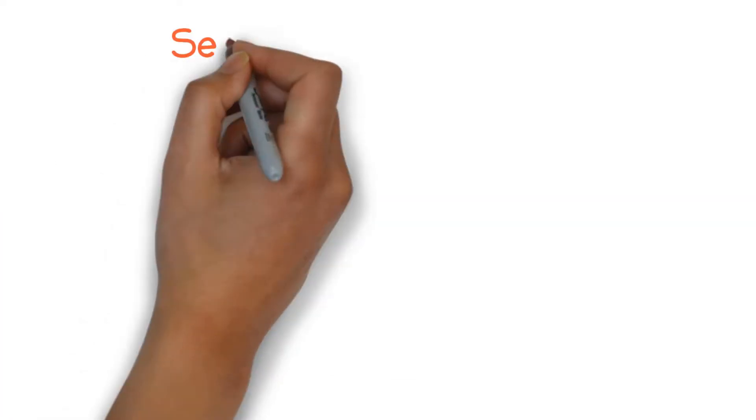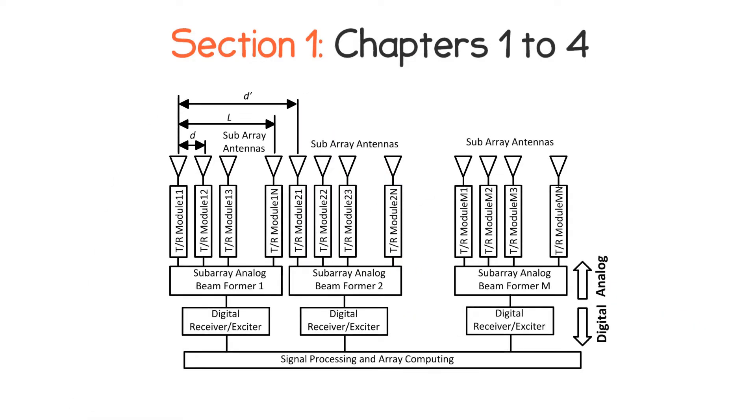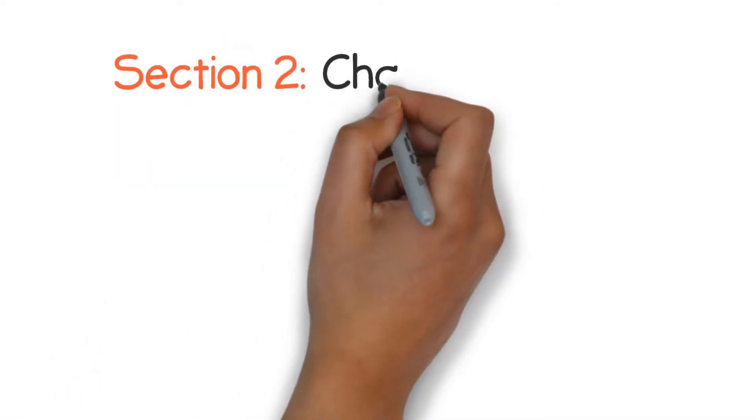Section 1 is Chapters 1 to 4, which describe top-level systems engineering activities. Section 2 is Chapters 5 to 9,